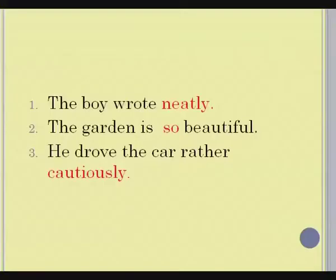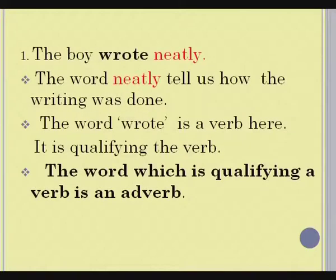Those are called adverbs. Now, let us see what adverbs are. The boy wrote neatly. The garden is so beautiful. He drove the car rather cautiously. The boy wrote neatly — the word 'neatly' tells us how the writing was done. The word 'wrote' is a verb here, and 'neatly' is qualifying the verb. The word which qualifies a verb is an adverb.